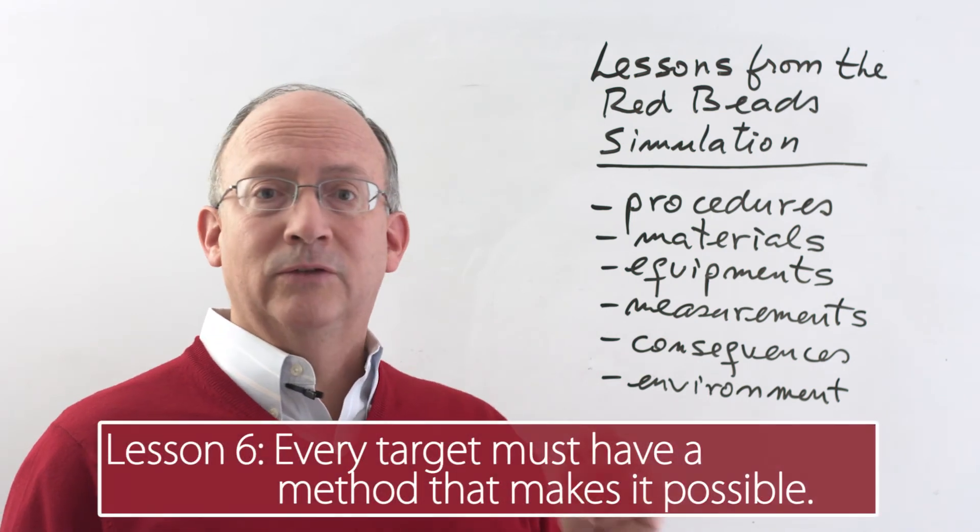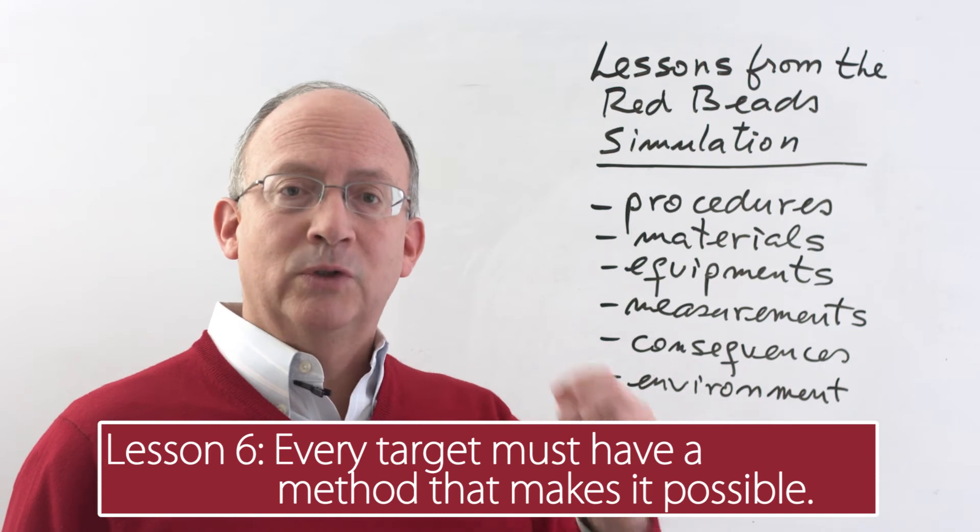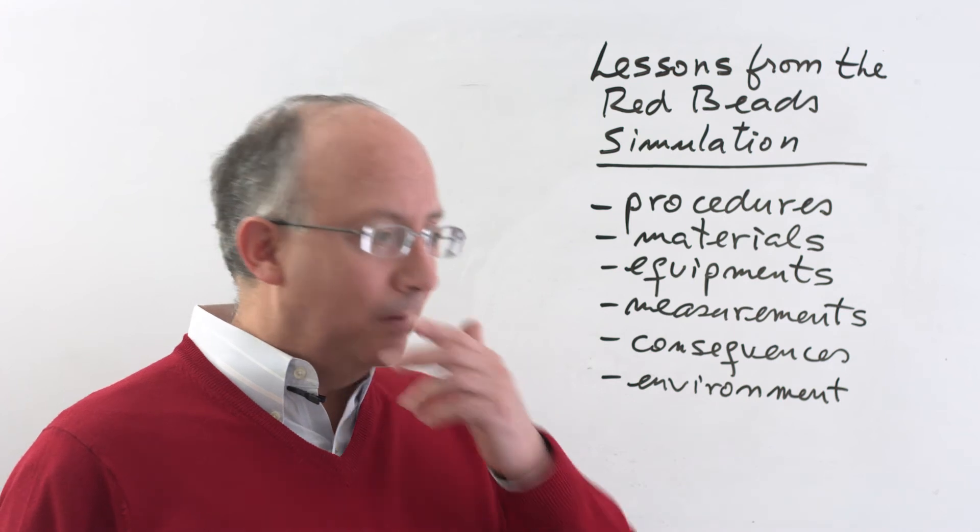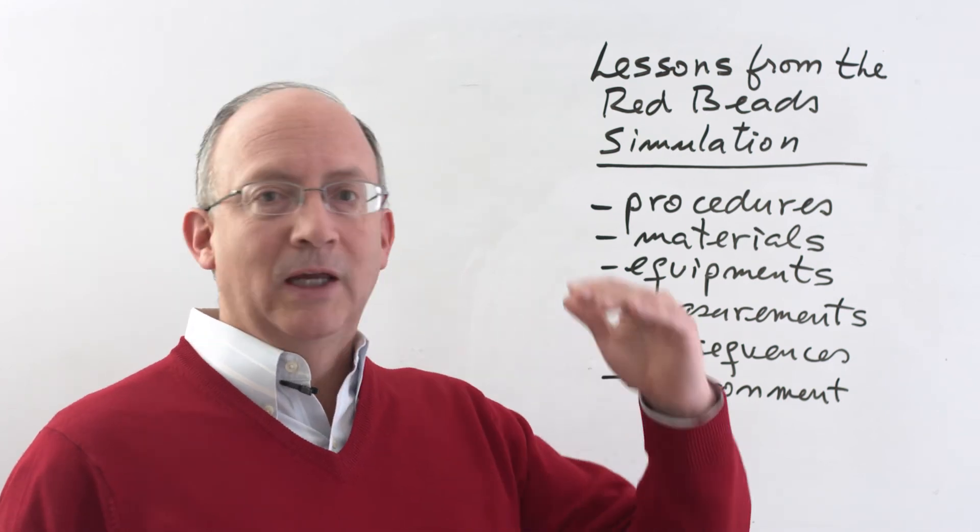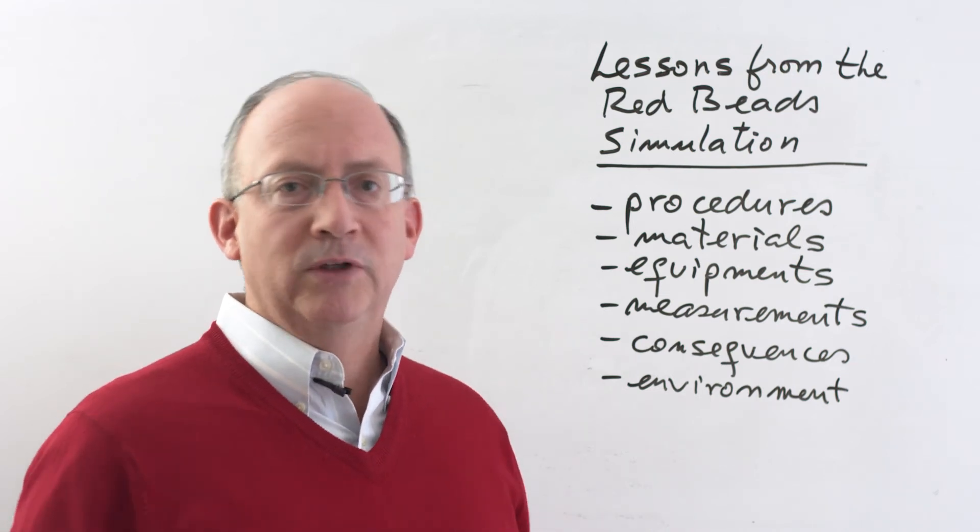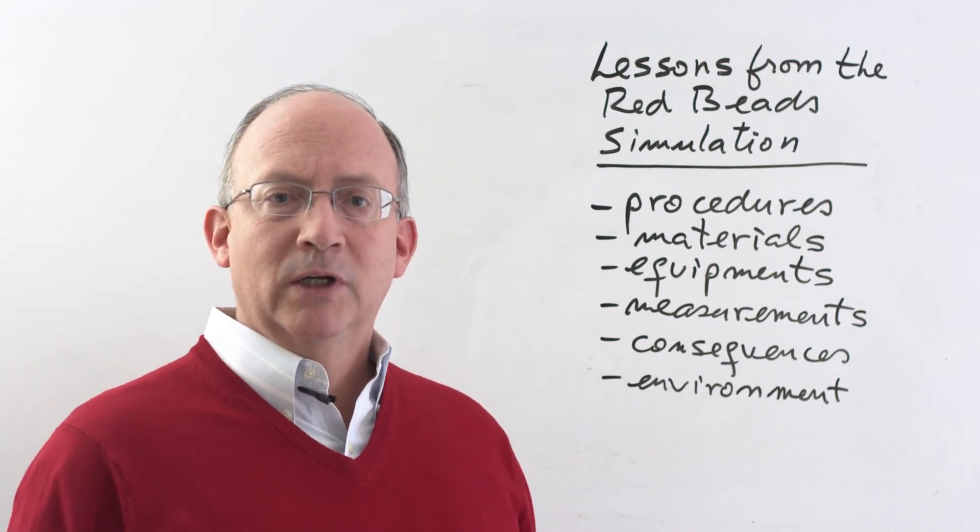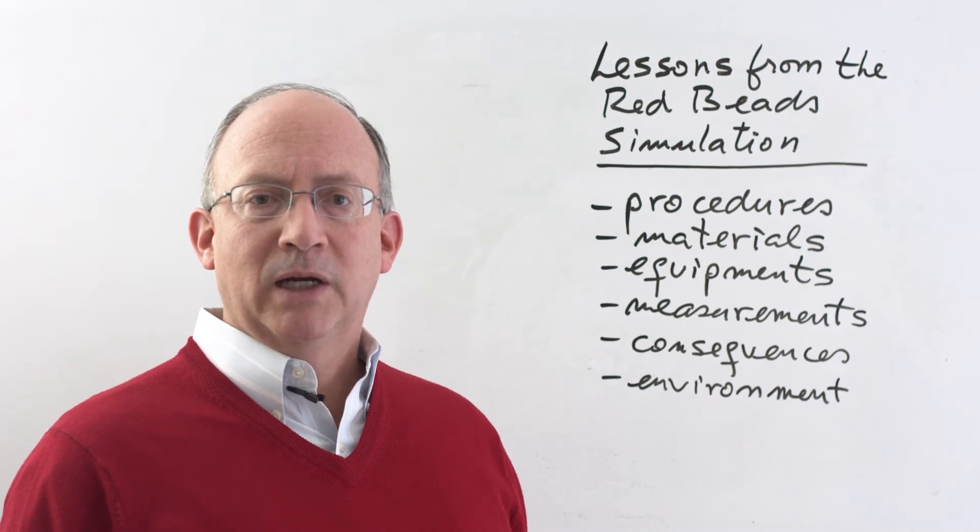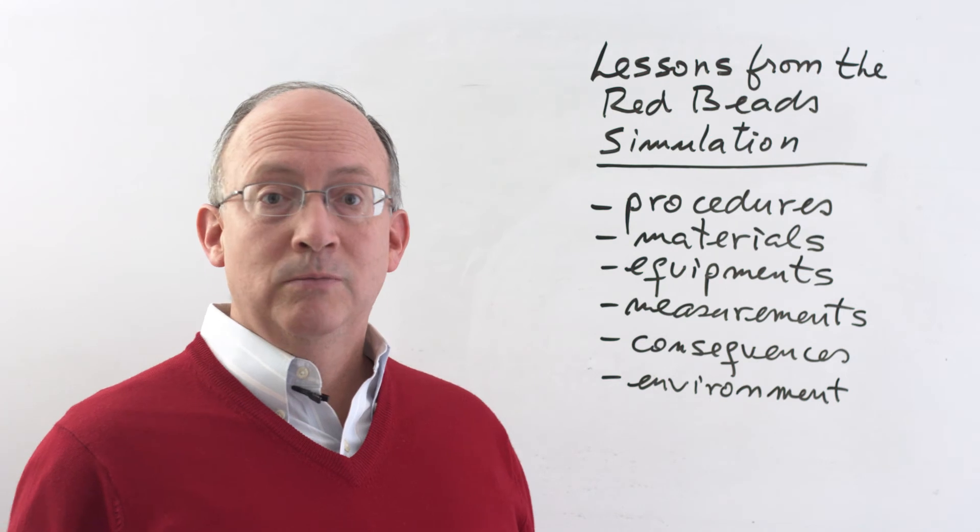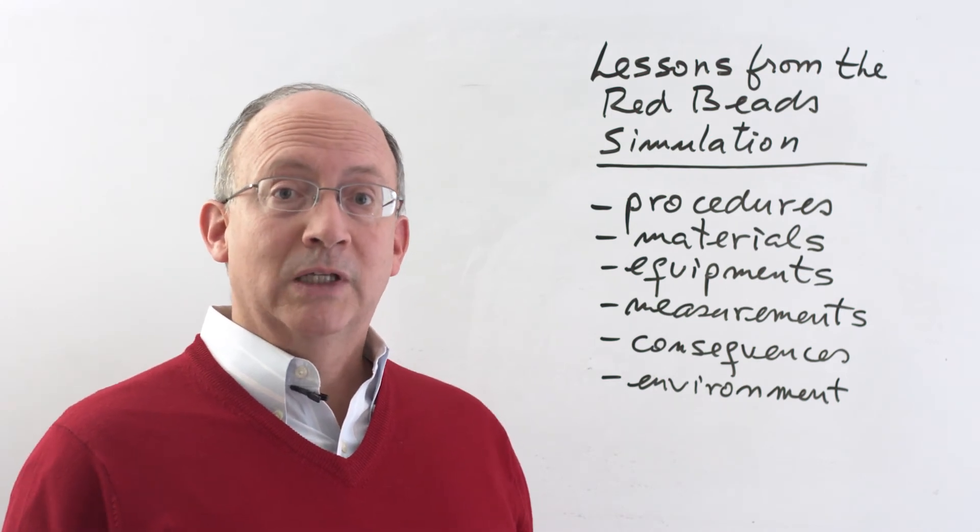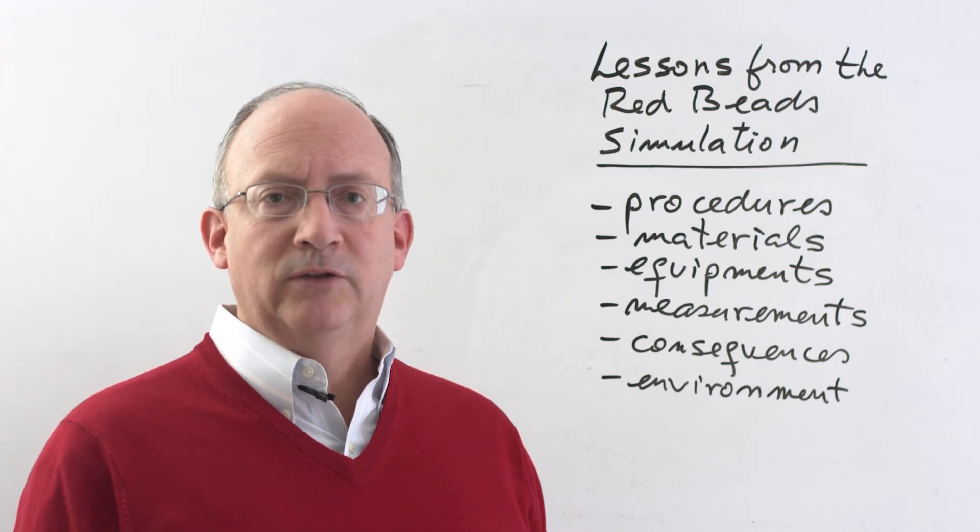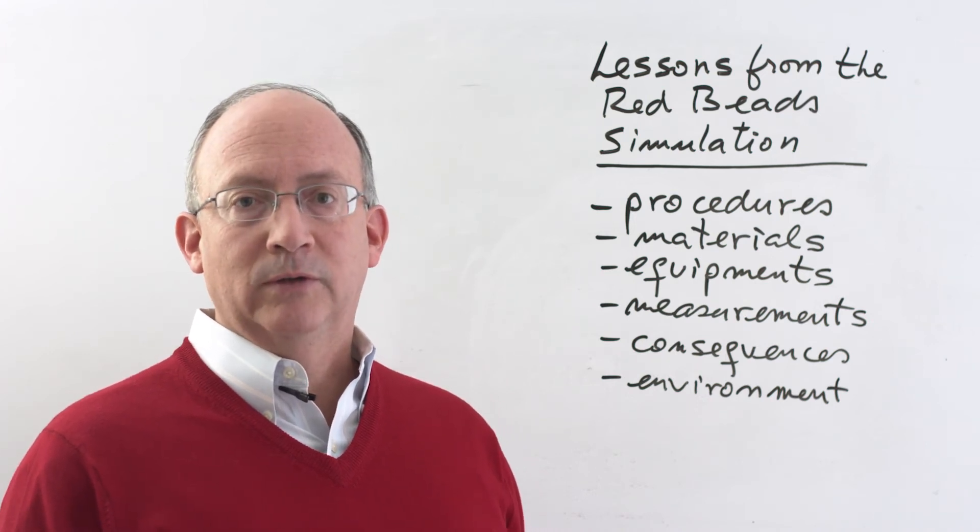Another key lesson is the fact that the means to achieve a target must be provided. Deming used to say that every target needs to have a method by which it can be achieved. Otherwise, you are kind of forcing employees into all types of negative behaviors to achieve that particular objective, beginning by focusing on their own jobs exclusively. And in doing so, you basically kill collaboration. And that also means that you are killing the notion that the company is a system, which is one of the key insights that we also want to get from this simulation.